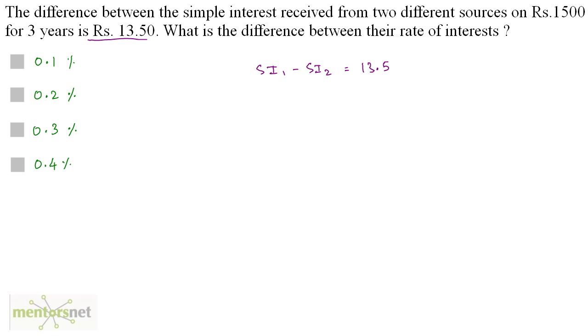So SI1 can be written as PNR upon 100. The principal is 1500 times N is 3 times R1 upon 100 minus again 1500 times 3 times R2 upon 100 is equal to 13.5. So cancelling out the zeros, we have 15 times 3 is 45 R1 minus 45 R2 and that's 13.5.